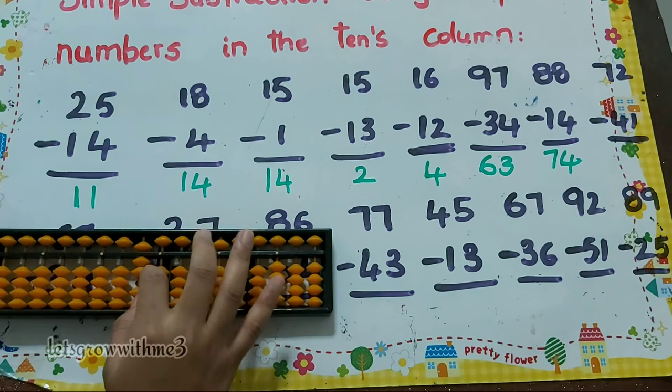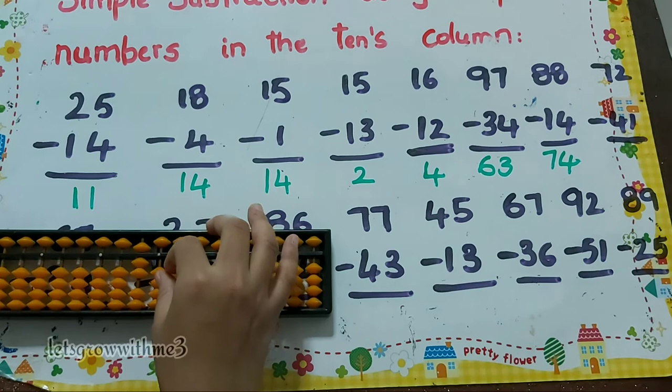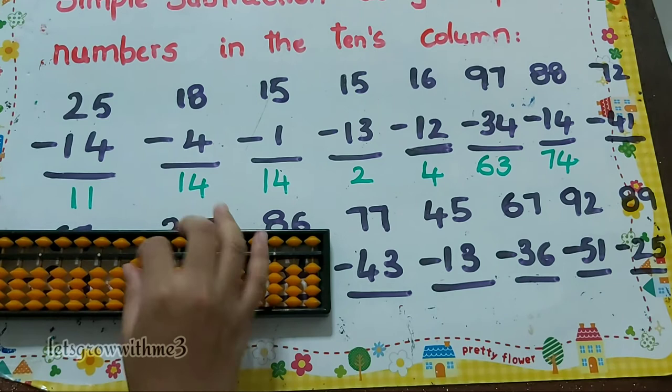Next one, 72 minus 4: how to do minus 4? Minus 5 plus 1, minus 1. So the answer is 31.